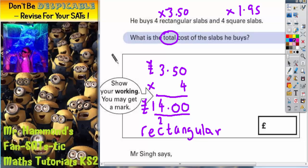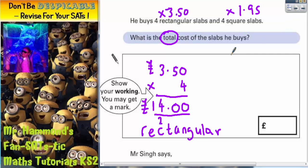We now need to work out the cost of the square slabs. So the square slabs were £1.95, and he buys four of them. So we want £1.95 times by four.